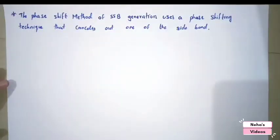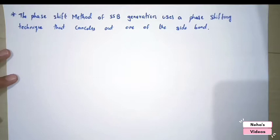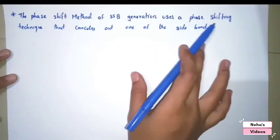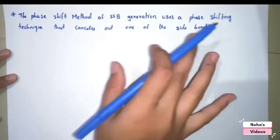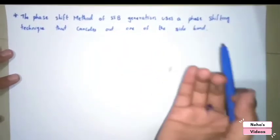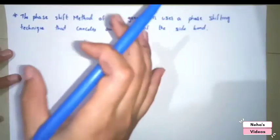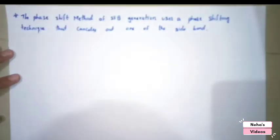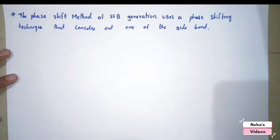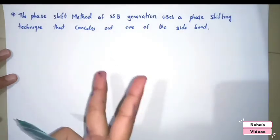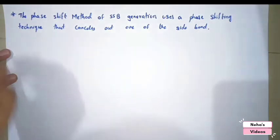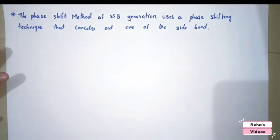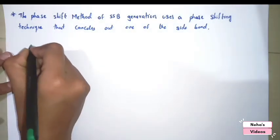Let's discuss the answer and understand what the phase shift method is and what happens in it. The phase shift method of SSB generation uses a phase shifting technique that cancels out one of the sidebands. One sideband of the signal is removed from the entire signal. The block diagram consists of two balanced modulators, two 90-degree phase shifting networks, and a summing amplifier.